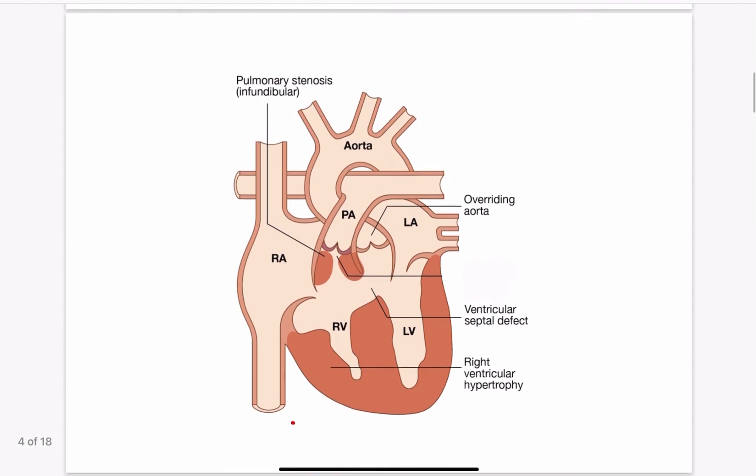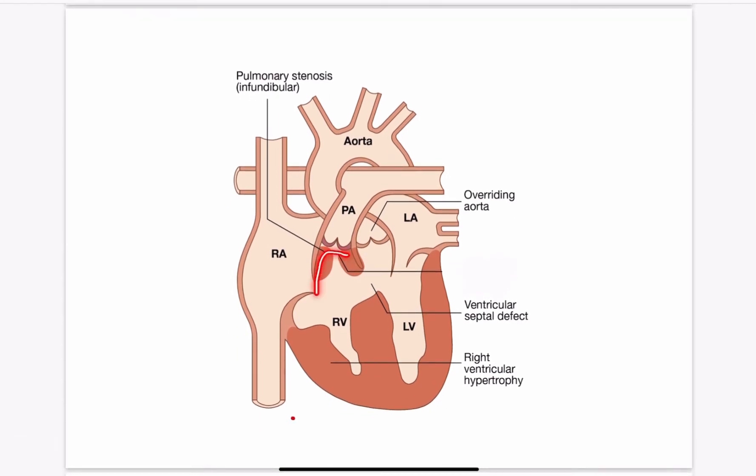During the process of development the infundibulum displaces towards the right ventricle. Due to this reason the bulbus septum present between the pulmonary artery and aorta cannot join with the interventricular septum. This creates a gap giving rise to ventricular septal defect. Also as the infundibulum displaces it drags aorta along with it. So the opening of aorta comes to lie near the ventricular septal defect. This is called aortic overriding.